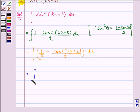This is equal to integral of 1 by 2 dx minus integral of cos 2, 2x plus 5 divided by 2 dx.